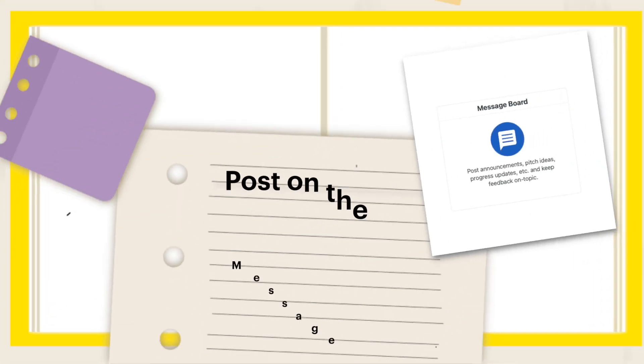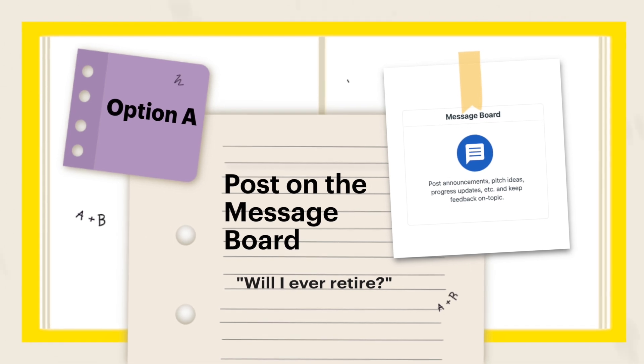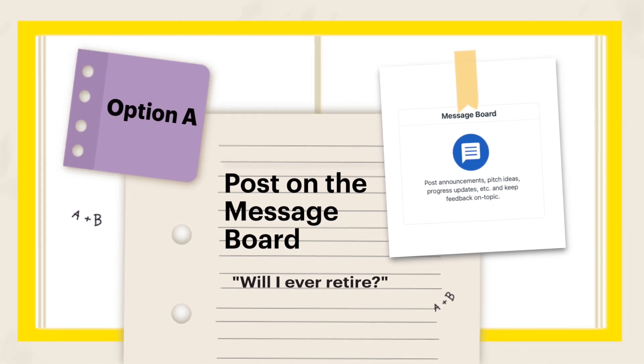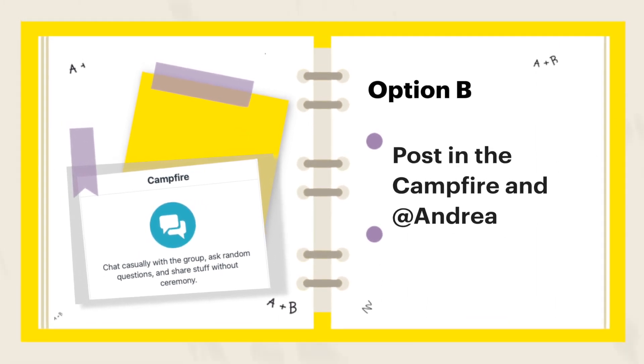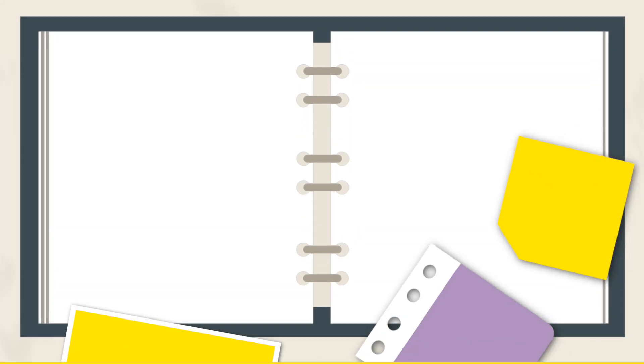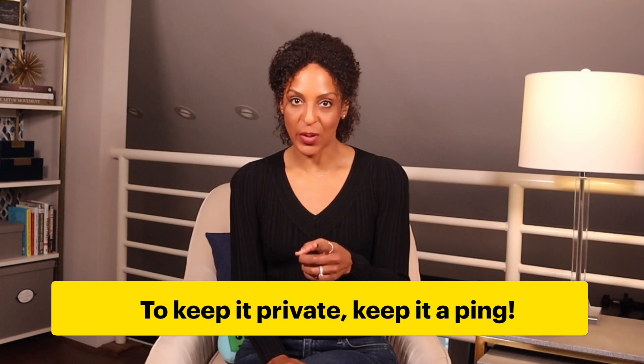Question two: let's say I have a question for Andrea, the head of our people department, about my 401k contributions. Should I A) go to a company-wide project and post a message on the message board titled 'Will I Ever Retire'? B) post in the campfire of a company-wide project and at-mention Andrea? Or C) send Andrea a ping? The answer is C — send her a ping. There's no reason anyone else needs to be looped into my communication with Andrea about this topic. To keep it private, keep it a ping.